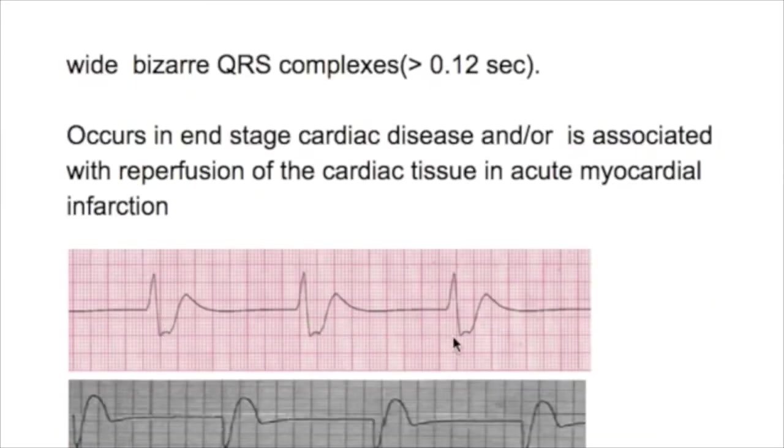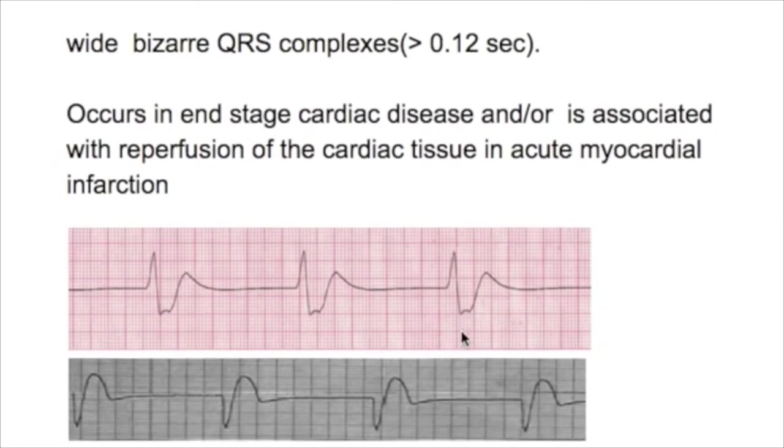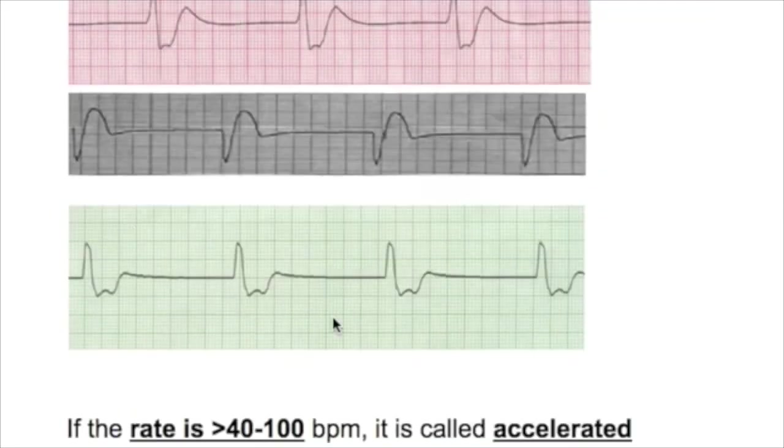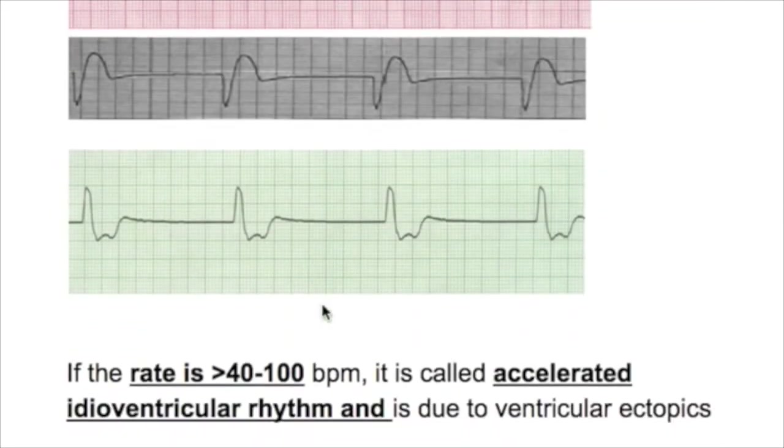These are the ECGs for idioventricular rhythm: regular, low rate, with wide and bizarre QRS complexes.